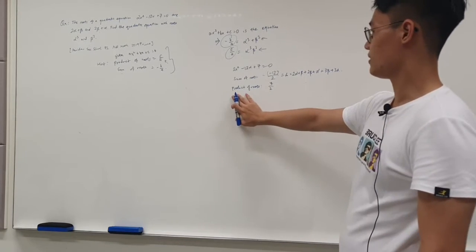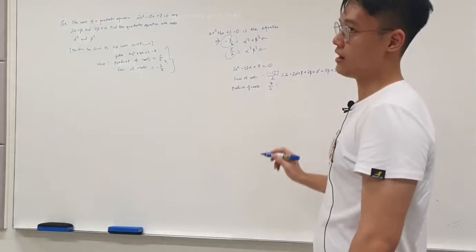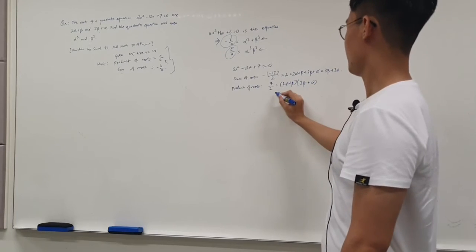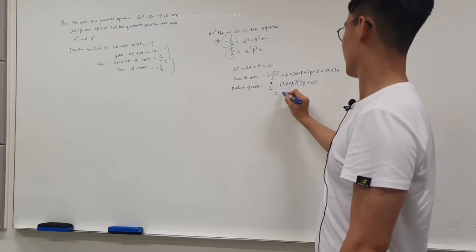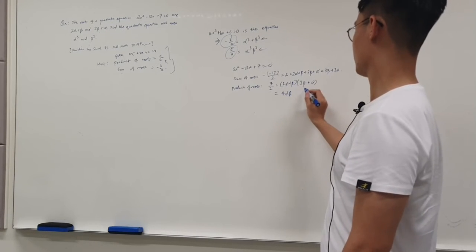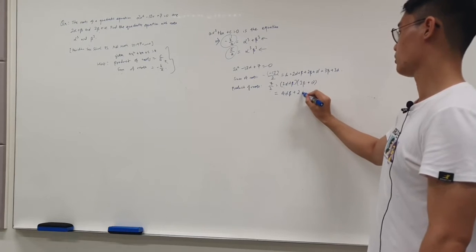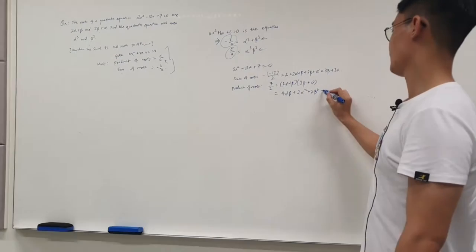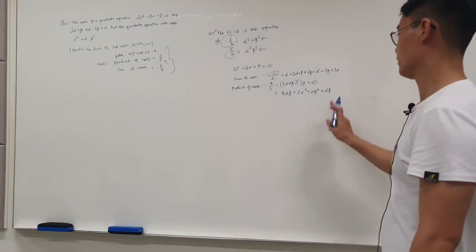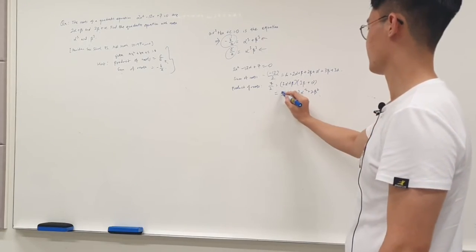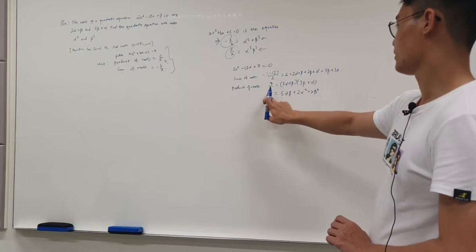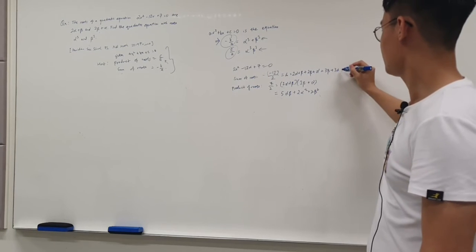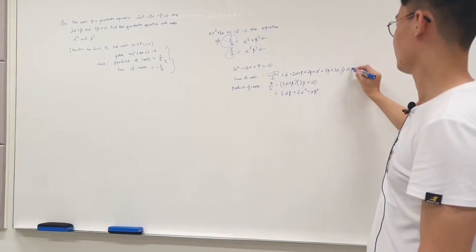Now we want to find the product of the roots in terms of α and β. This is equal to (2α + β)(2β + α), which expands to 4αβ + 2α² + 2β² + αβ, giving us 2α² + 2β² + 5αβ. So 7/2 equals 2α² + 2β² + 5αβ, and 6 equals 3β + 3α, which means α + β = 2.